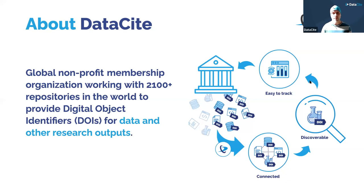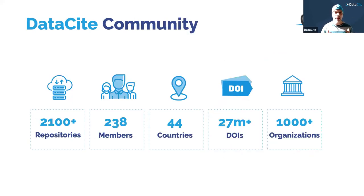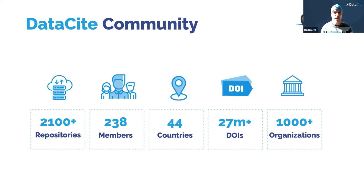DOIs help you increase the impact of your research — not only in terms of visibility, but also for your institution and yourself. It's easy to track the impact of your research because there are many systems that give you statistics about how many times your outputs were viewed, downloaded, and even cited. This really creates a life cycle of how your research benefits from DOIs. Datacite has over 27 million DOIs registered since its founding in 2009.